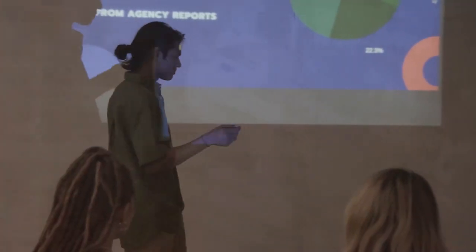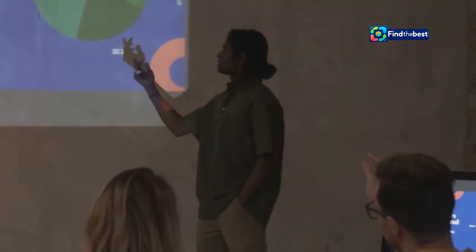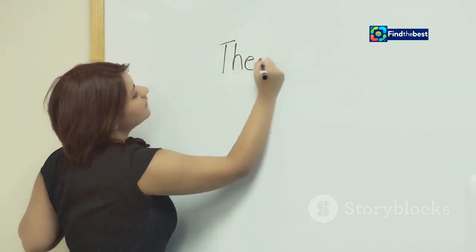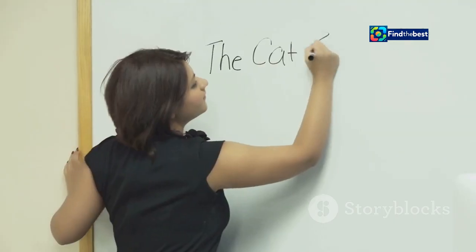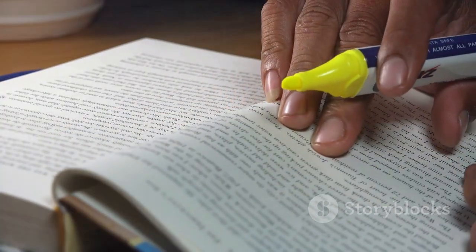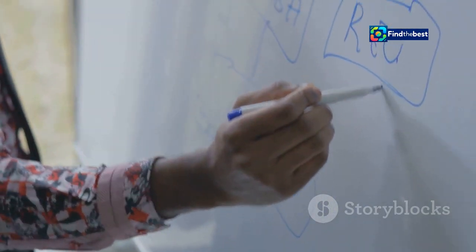But how do you write an introduction that captivates? Start with a hook — this could be a thought-provoking question, a surprising statistic, or a relatable anecdote. The hook draws readers in, piques their interest, and makes them want to learn more. It should resonate with them on a personal level. Once you have their attention, introduce your topic and state your main argument or thesis statement — the central idea you'll be exploring throughout your essay. Make it clear, concise, and easy to understand, avoiding jargon and complex language.